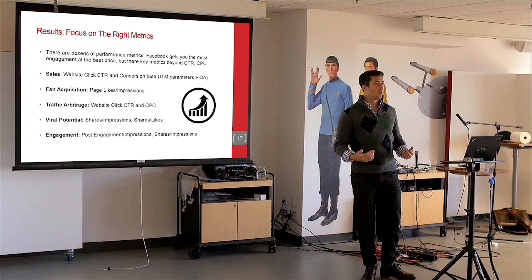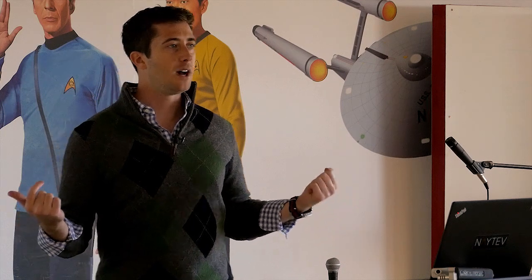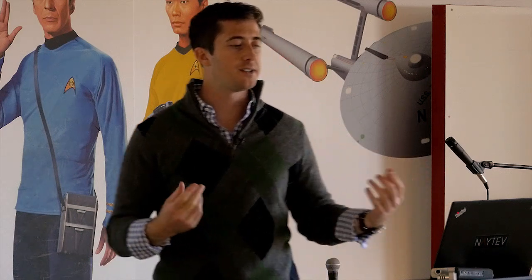For viral potential, if your goal is just to get lots of sharing and tons of visibility, there are two metrics I like: how many shares you're getting per impression, and how many shares per like. If you have one share for every ten likes, that's not particularly good. If you're getting one share for every click, that could be a home run. Shares are the key driver of visibility — likes are nice, but shares are the driver. If you're focused on community engagement, look at aggregate post engagement divided by impressions, and even more specifically, shares divided by impressions.